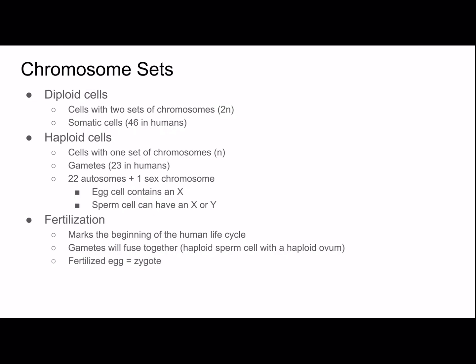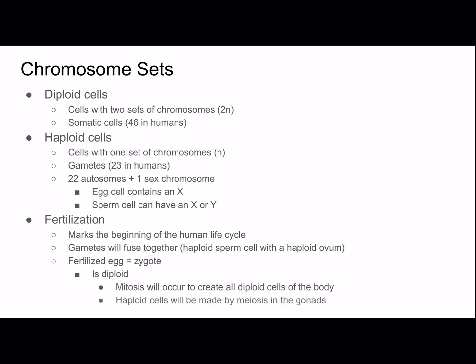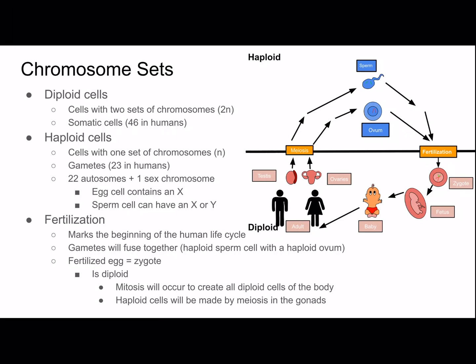The fertilized egg is called a zygote, and it's important that the zygote is diploid because it's made from the fusion of two haploid cells. Mitosis will occur to create all the diploid cells of the body, and the haploid cells will be made by meiosis in the gonads. Here's a picture showing how it's all related — the sperm and ovum are haploid, they fuse in fertilization to create a diploid zygote, which will then mature and the cycle will continue.